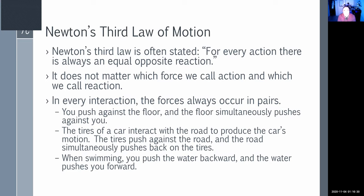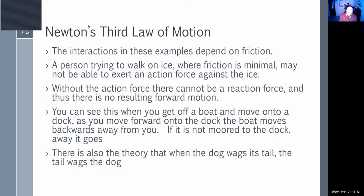What if you're swimming down a river? The river is already pushing on you, so you'll push further and the river pushes harder back, making you go faster. These interactions all depend on friction. A person trying to walk on ice where friction is minimal may not be able to exert an action force — you'd fall. That's why hockey players need sharp skates that cut into the ice to generate traction.